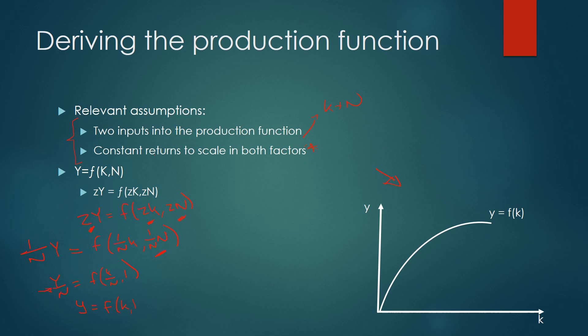So we're actually saying that output per worker is some factor of capital per worker and that's exactly what we have in this diagram to your right here because we can show that we have capital per worker on the x-axis and output per worker on the y-axis. We also assumed in our model that there is decreasing returns to scale in each of the individual inputs to the production function.